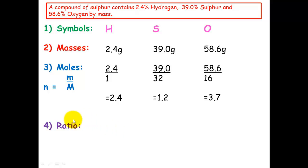Now the last step is the easiest step because you're just finding the ratio, and all you need to do is divide each of these three numbers by the lowest number that's there. So the lowest number in this sample is 1.2. So I'm going to divide all of these by 1.2. So for hydrogen, 2.4 divided by 1.2 equals 2. Sulfur, 1.2 divided by 1.2 equals 1. And for oxygen, 3.7 divided by 1.2 equals 3.1.